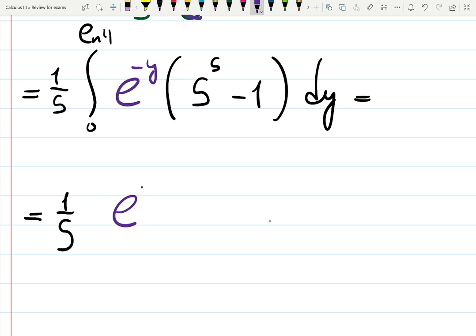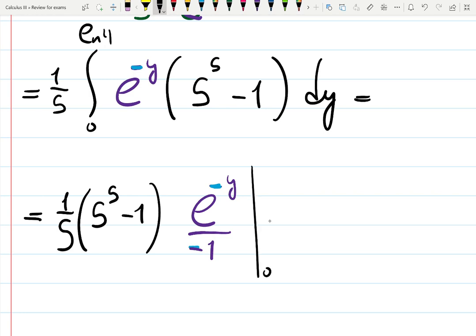So now we can again integrate, and you don't have to, you can still use your substitution if you want, but I will use the shortcut I just showed you. So it's going to be copy e to the minus y divided by the leading coefficient. Leading coefficient here is minus 1, and also the constant 5 to the 5 minus 1 can be taken outside of the integral, 5 to the 5 minus 1 bar from 0 to ln 4.